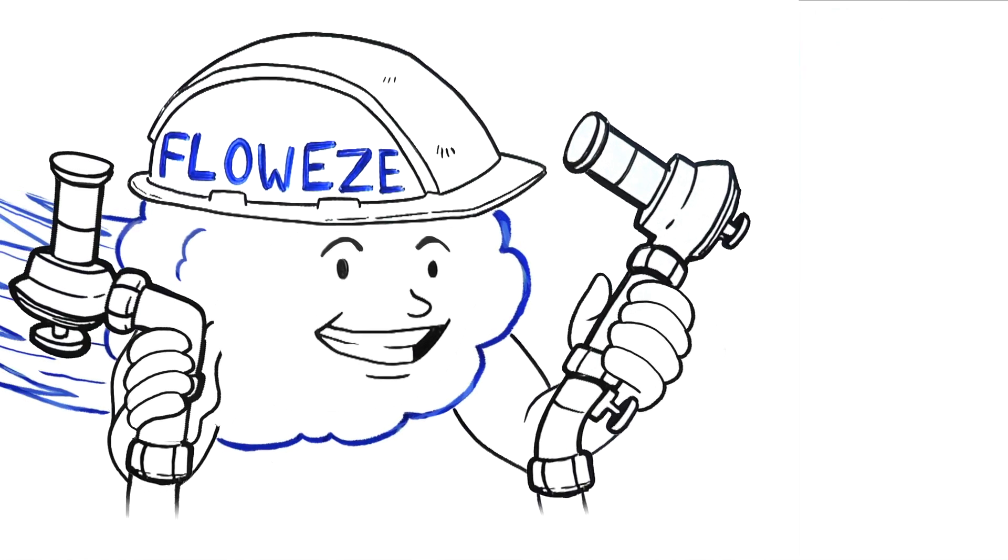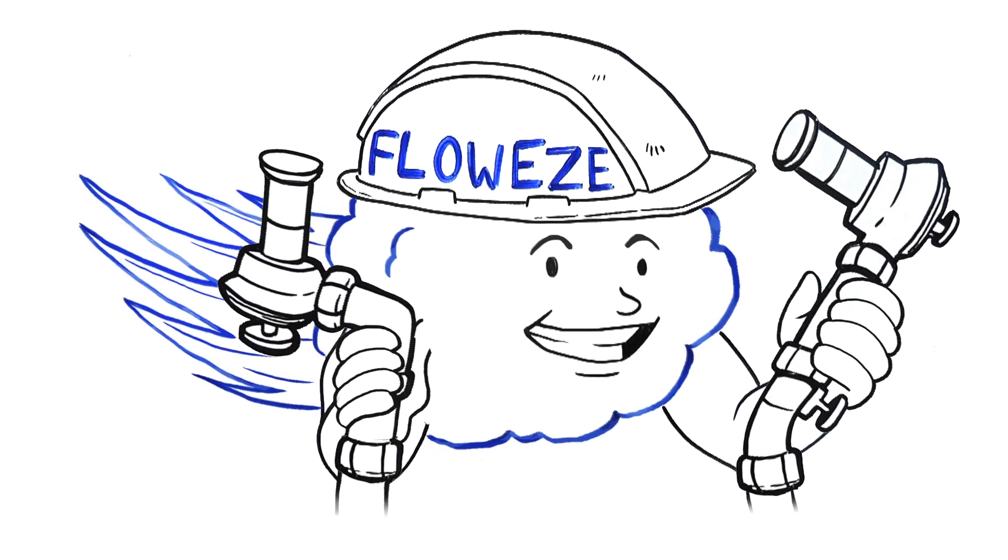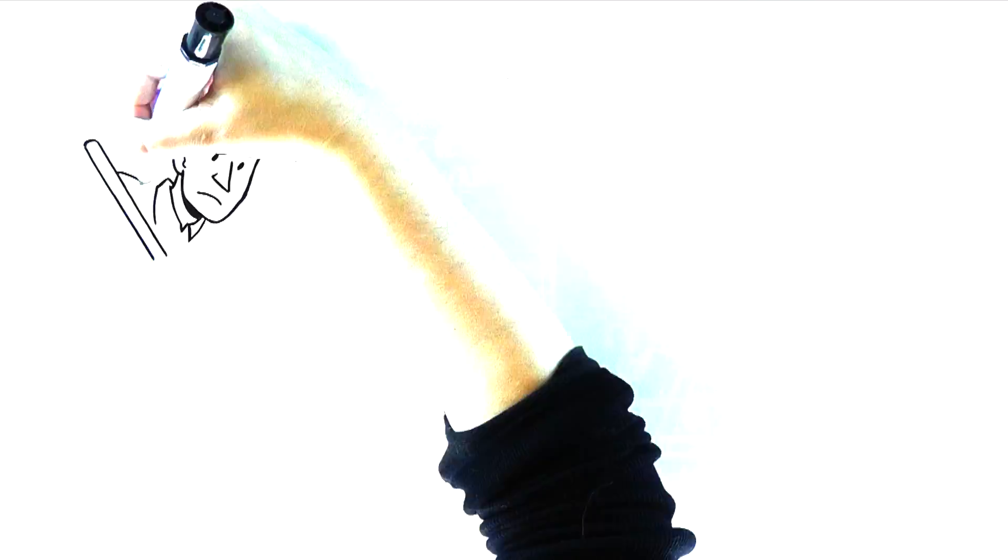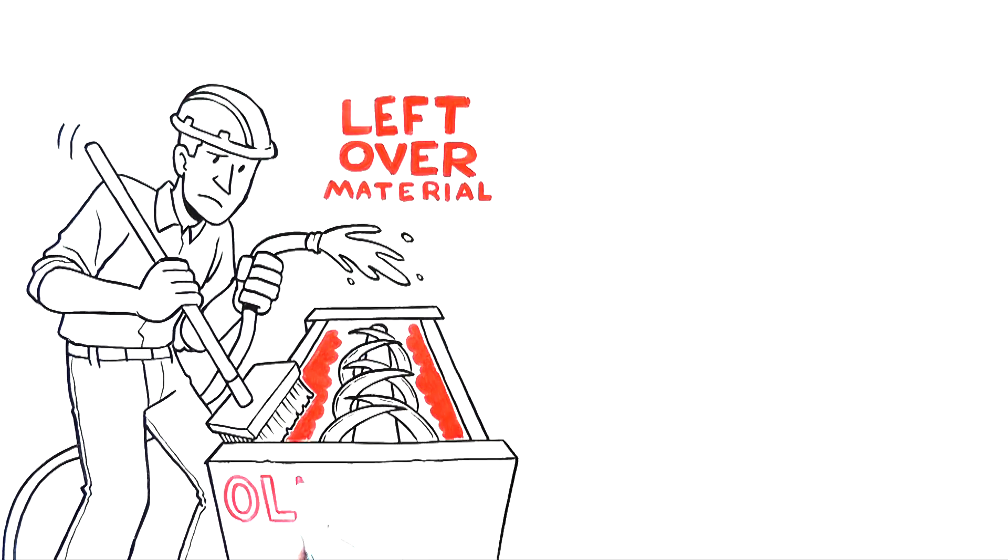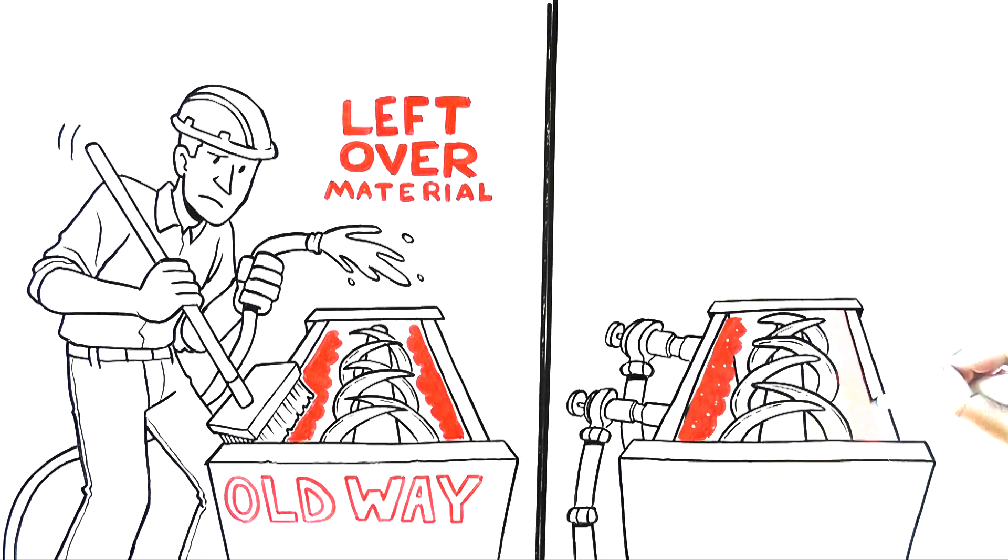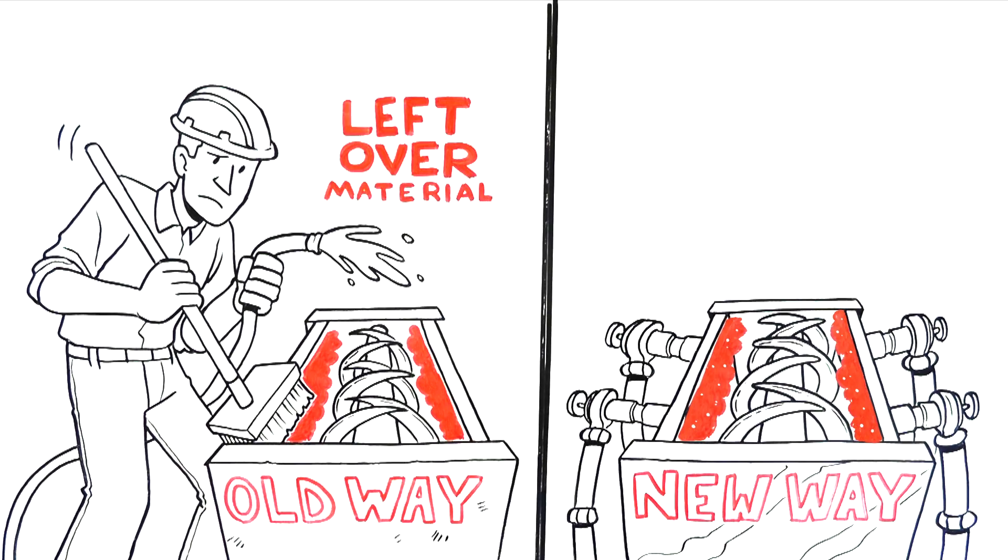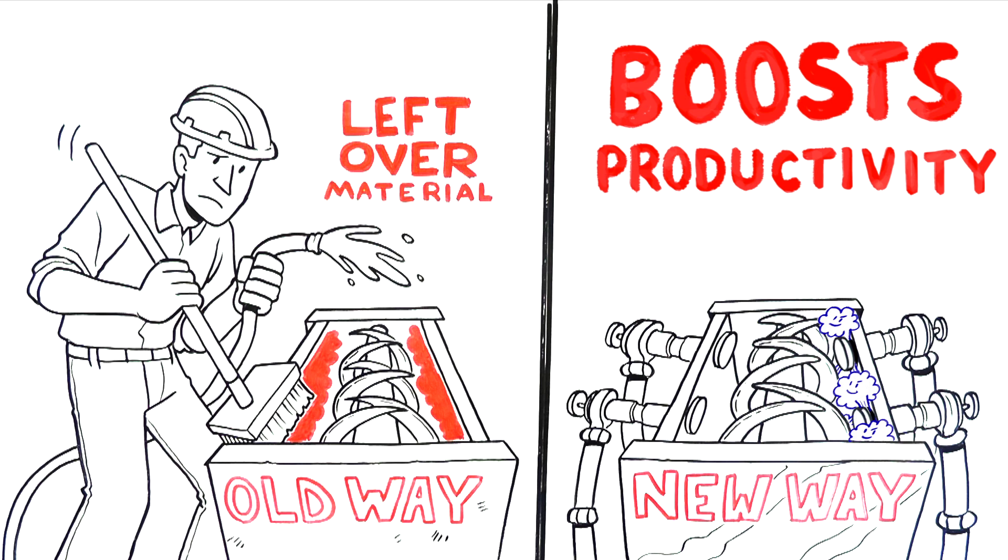It's a simple solution with amazing results thanks to me, Flowees. I can help in lots of places. The AirSweep system can clean out ribbon blenders and mixers between batches, saving time, material, and water, while boosting productivity and profits.